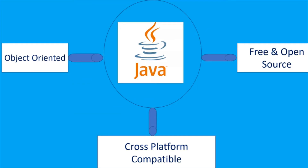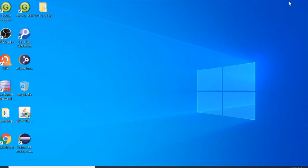The third key aspect of Java is that Java is free and open source. When we say Java is free and open source, it means Java is available for all of us — you can download Java and start working on it and start using it. So these are the key aspects of Java.